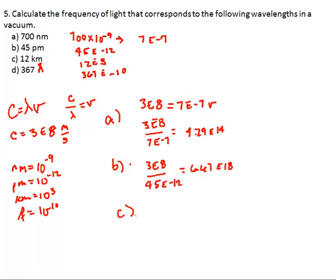And then for c, 3e to the 8th over 12e to the 3rd, which is equal to 2.5e to the 4th.